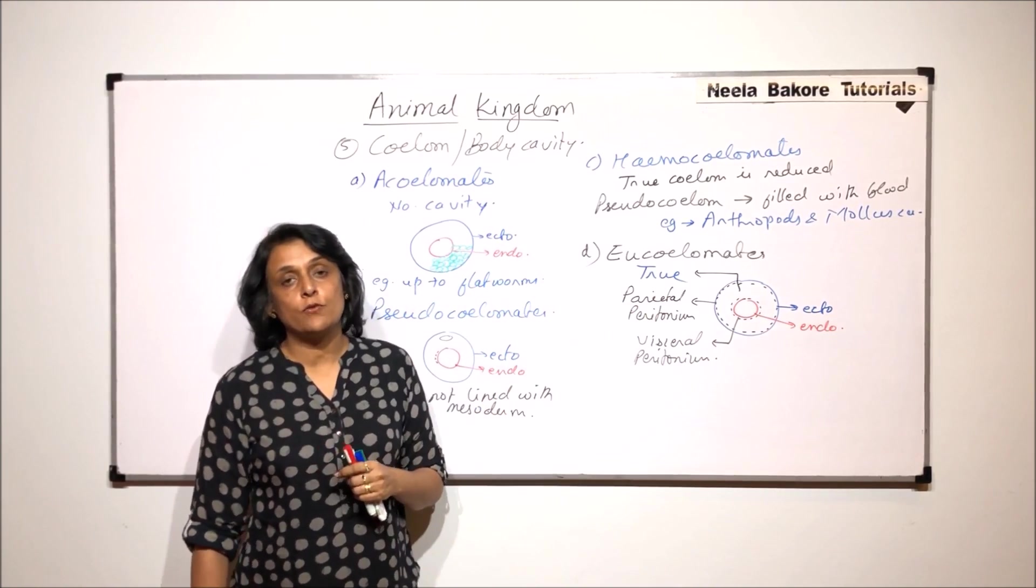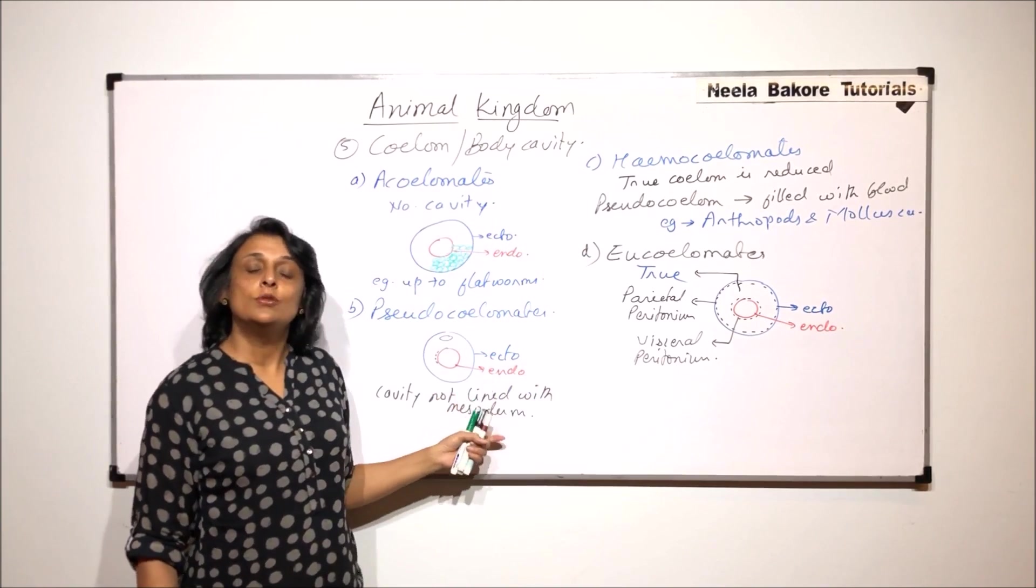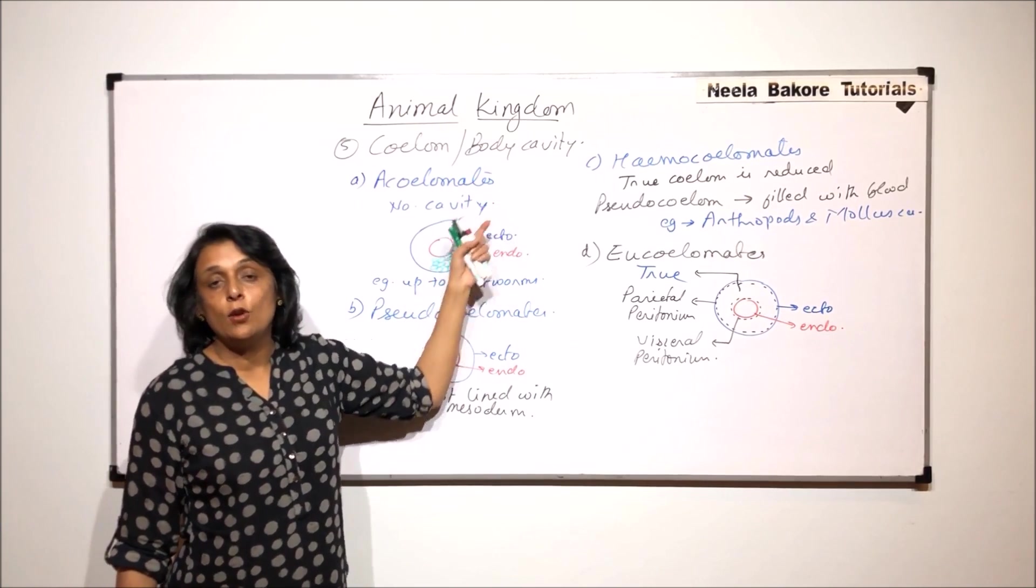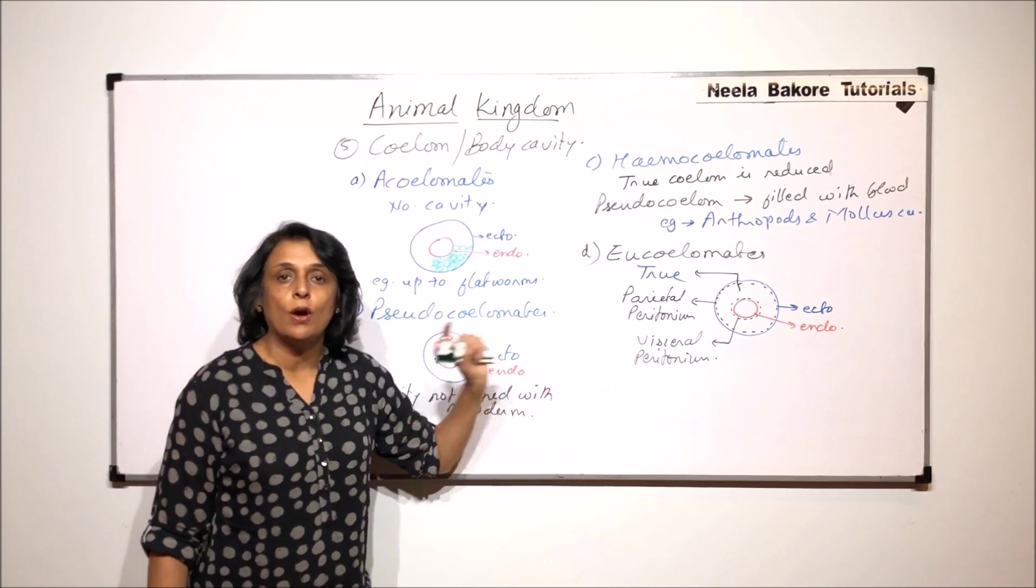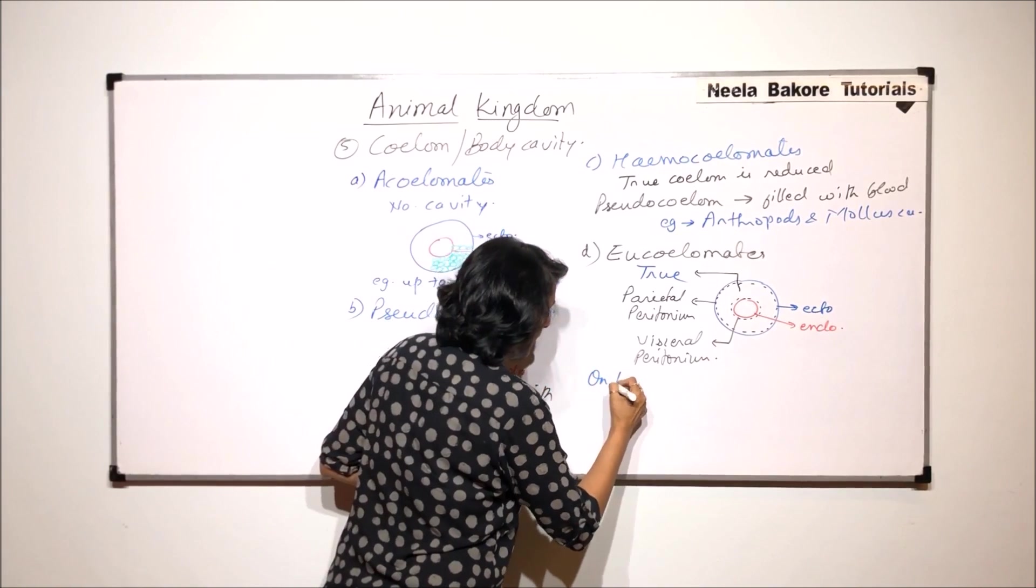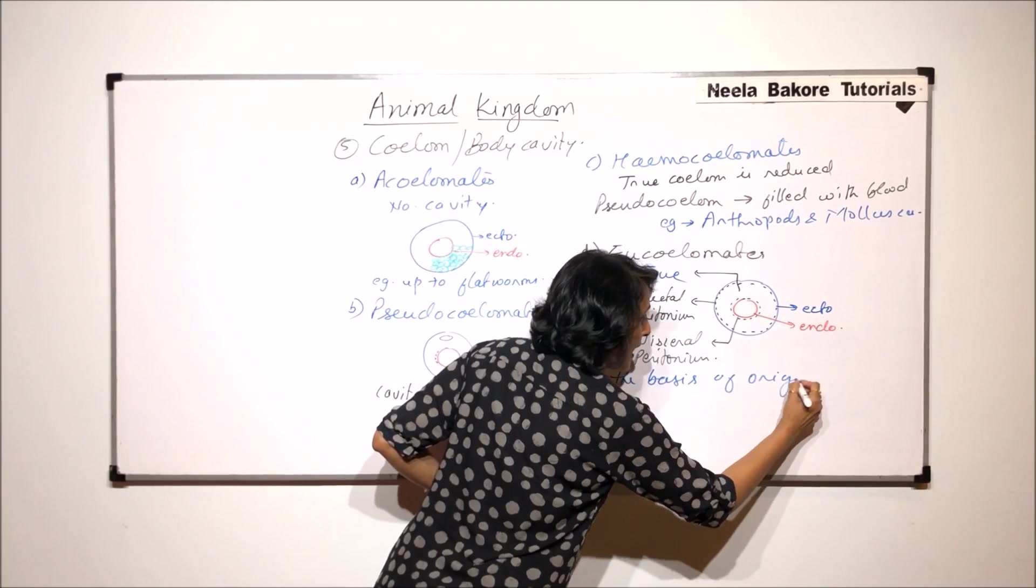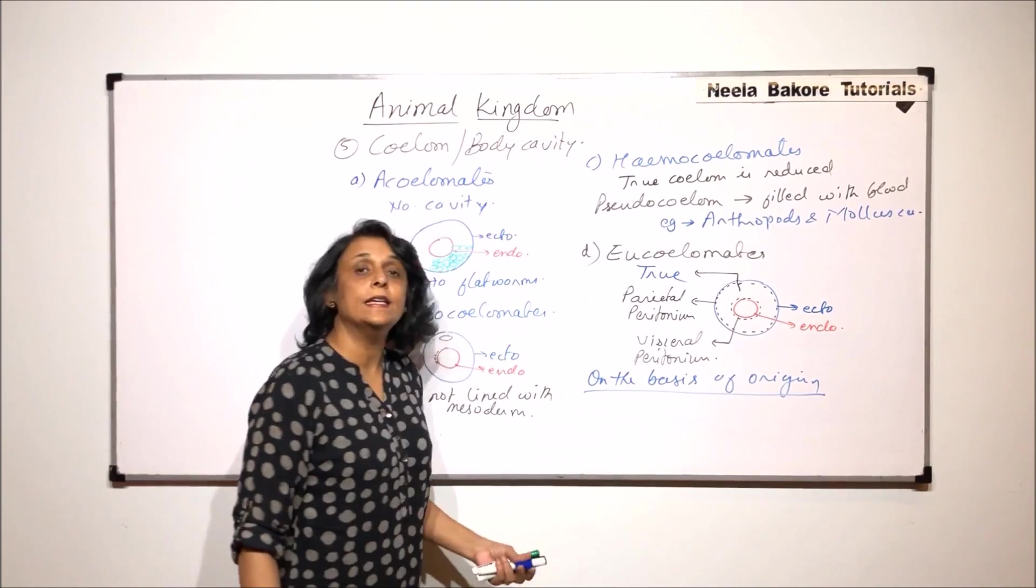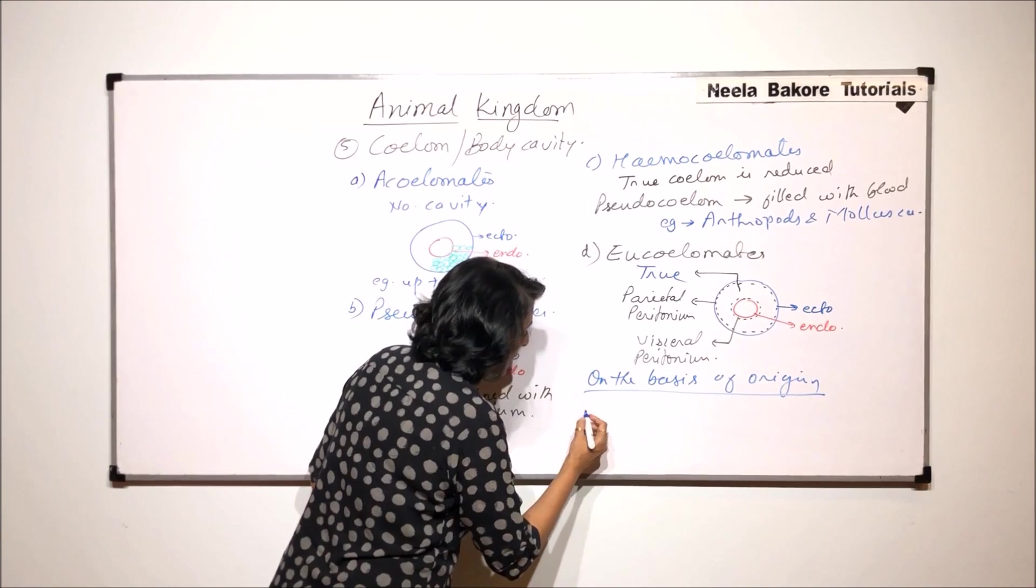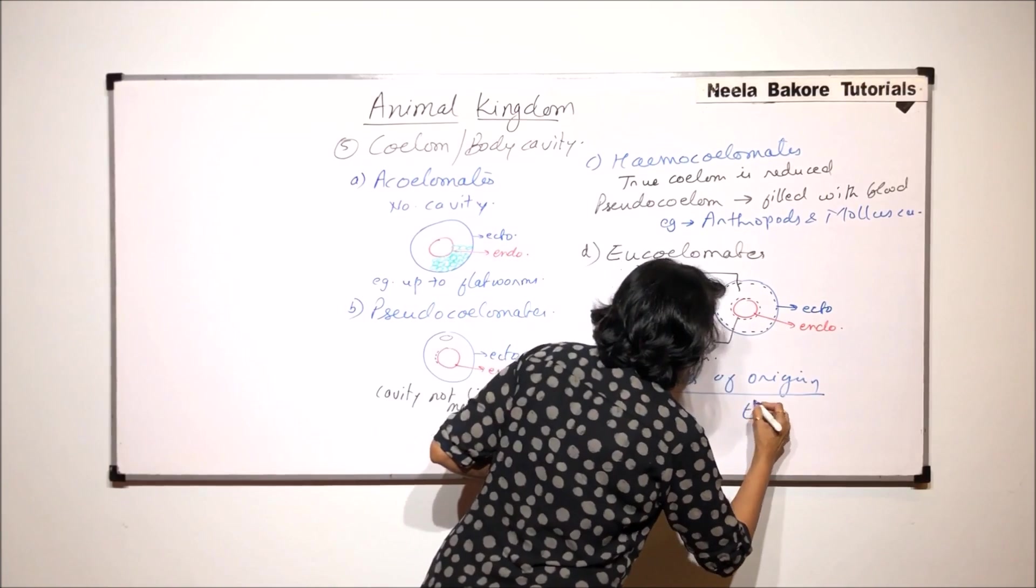Now, how are these eucoelomates formed? How is this mesoderm formed? So this is on the basis of how the cavity is, whether it is a cavity or not. If not, then acoelomate. Is cavity present? Is it true or not? Now, on the basis of origin, we can have the cavities classified into two categories. We can call them schizocoelom or enterocoelom.